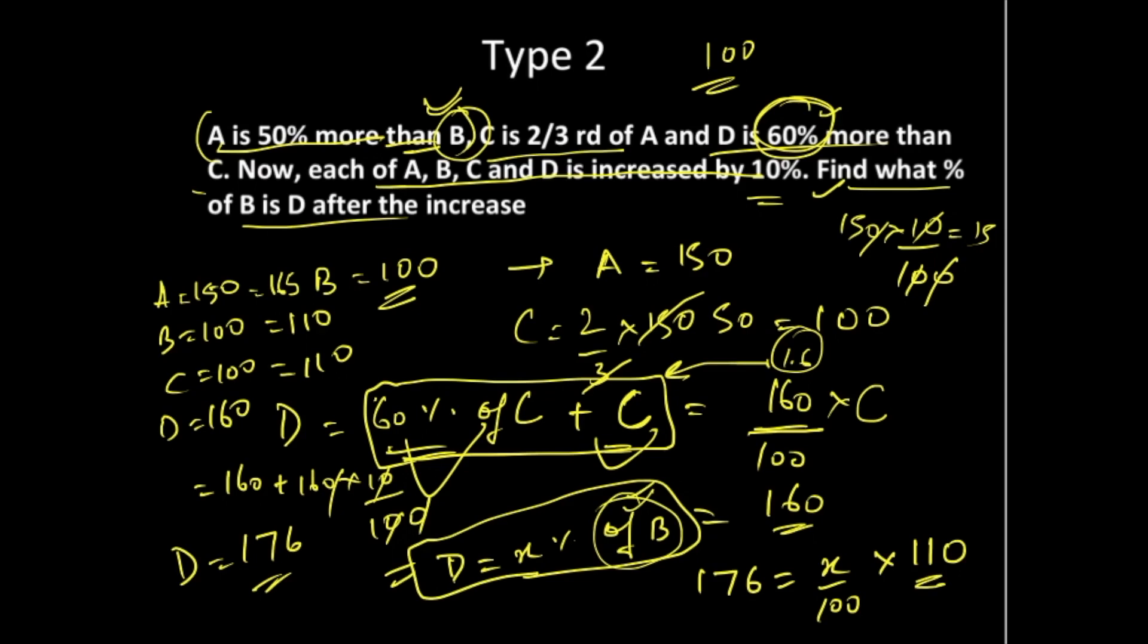B's value comes here. If you solve this, the zero cancels, so x percent becomes 176/110. You can cancel this by 11, which gives 16. So D is 160 percent of B after the increment. You can simplify this process by directly dividing 176 by 110 and multiplying by 100, getting the same answer of 160.